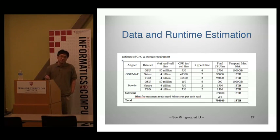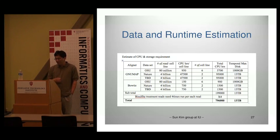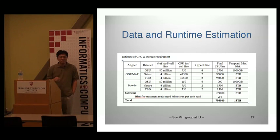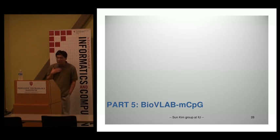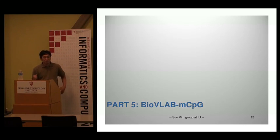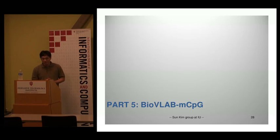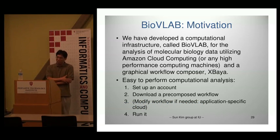We need to use algorithms like Bowtie and BS-Map that naturally support multi-core computing, but the 800,000 CPU hours required means we need different strategies — for example, optimizing memory use. Because of data volume and because we are dealing with the entire human genome at 3 billion positions, this requires a lot of tools and data transfers. So we are building a system called BioVirtual Lab — MCPG, methylation CpG.